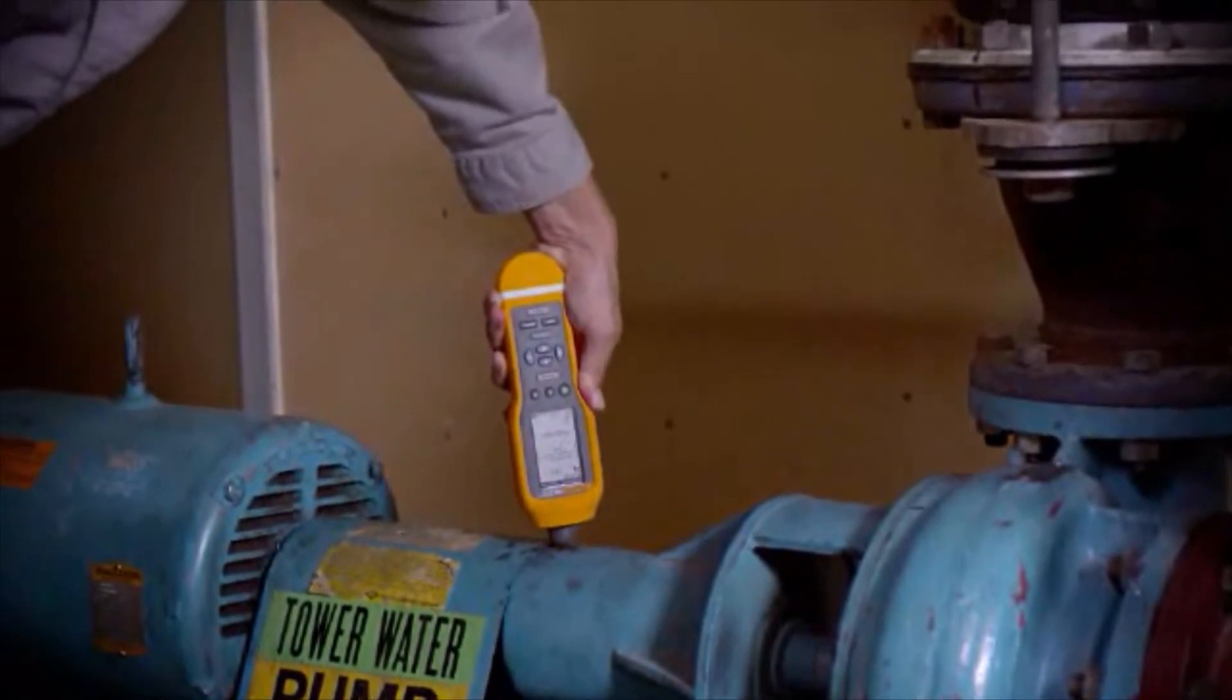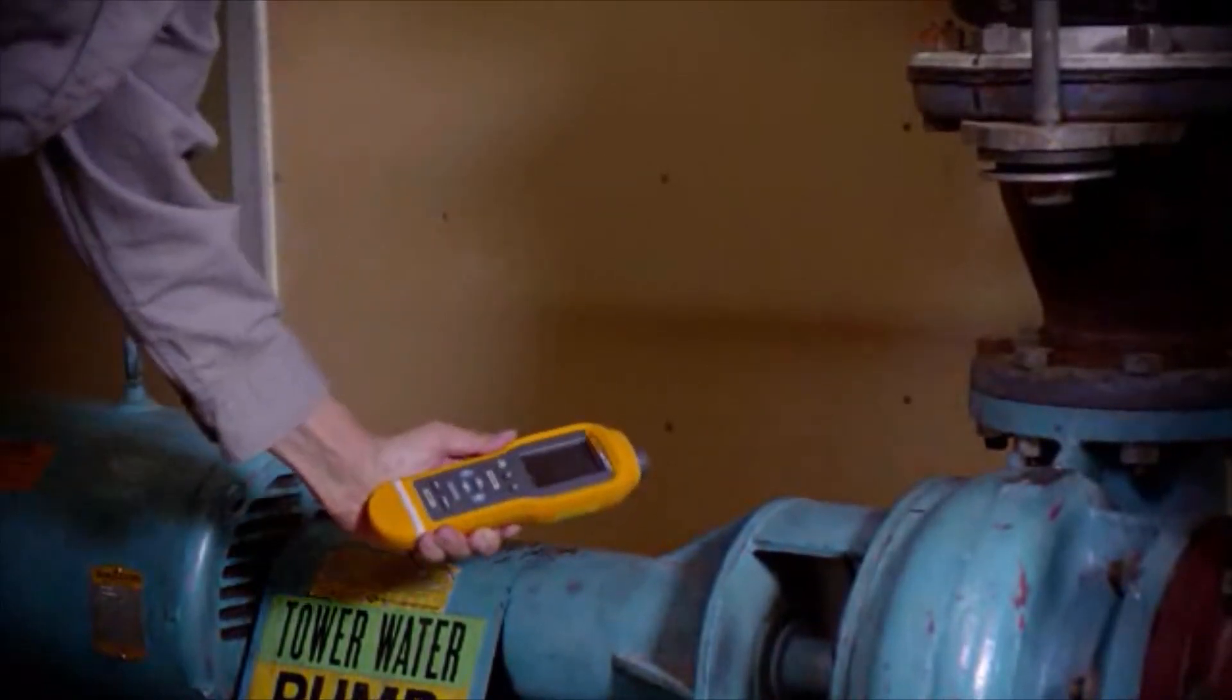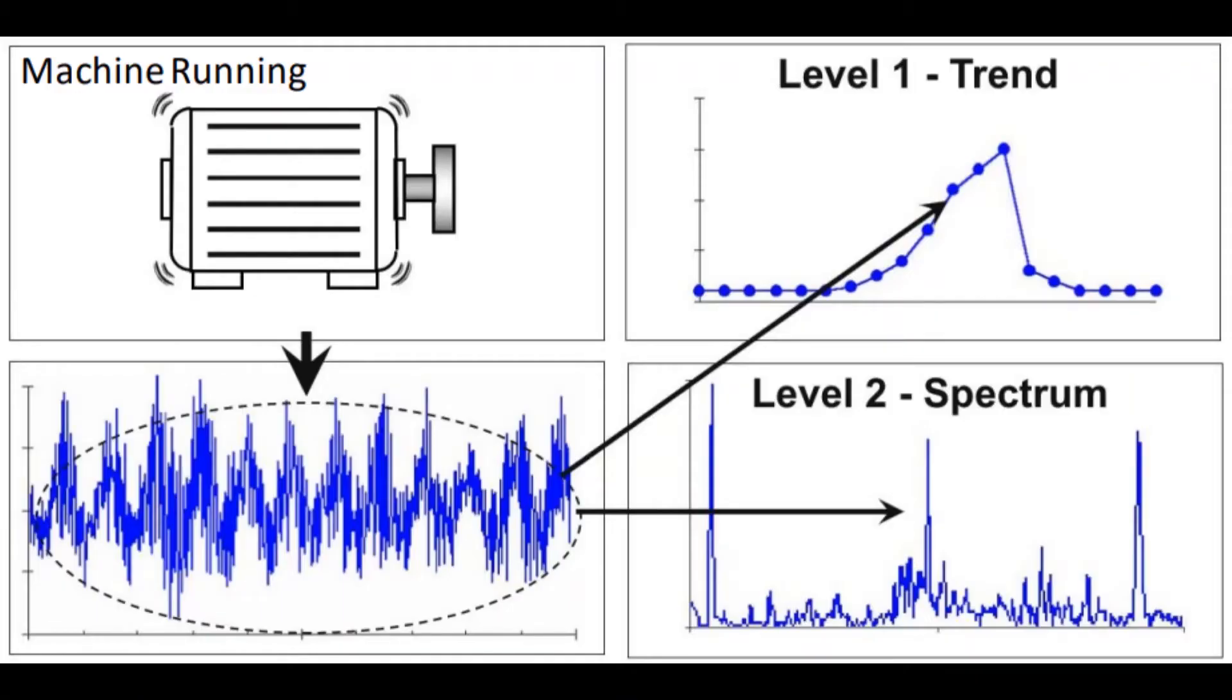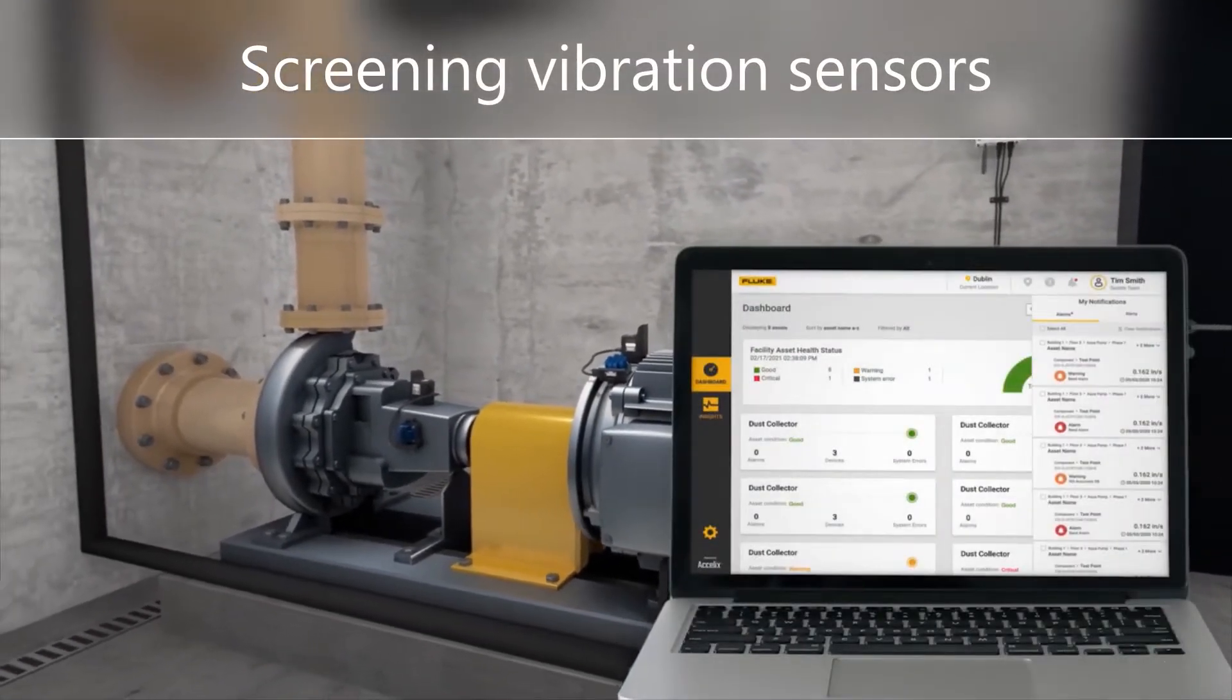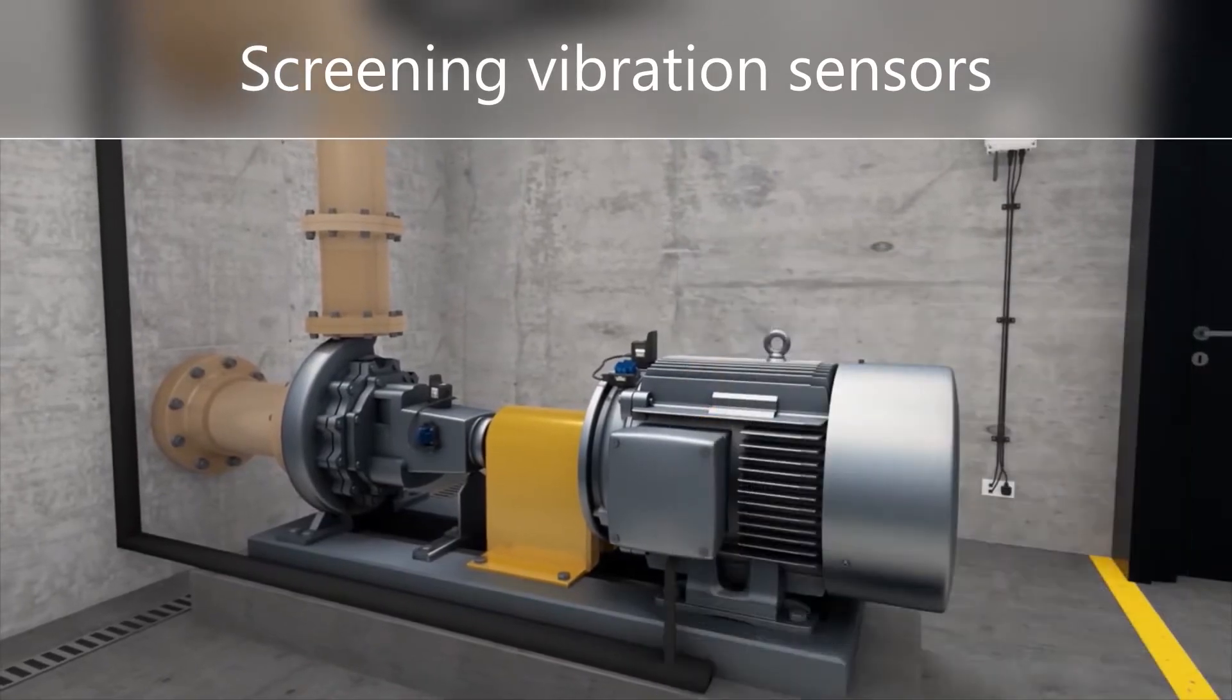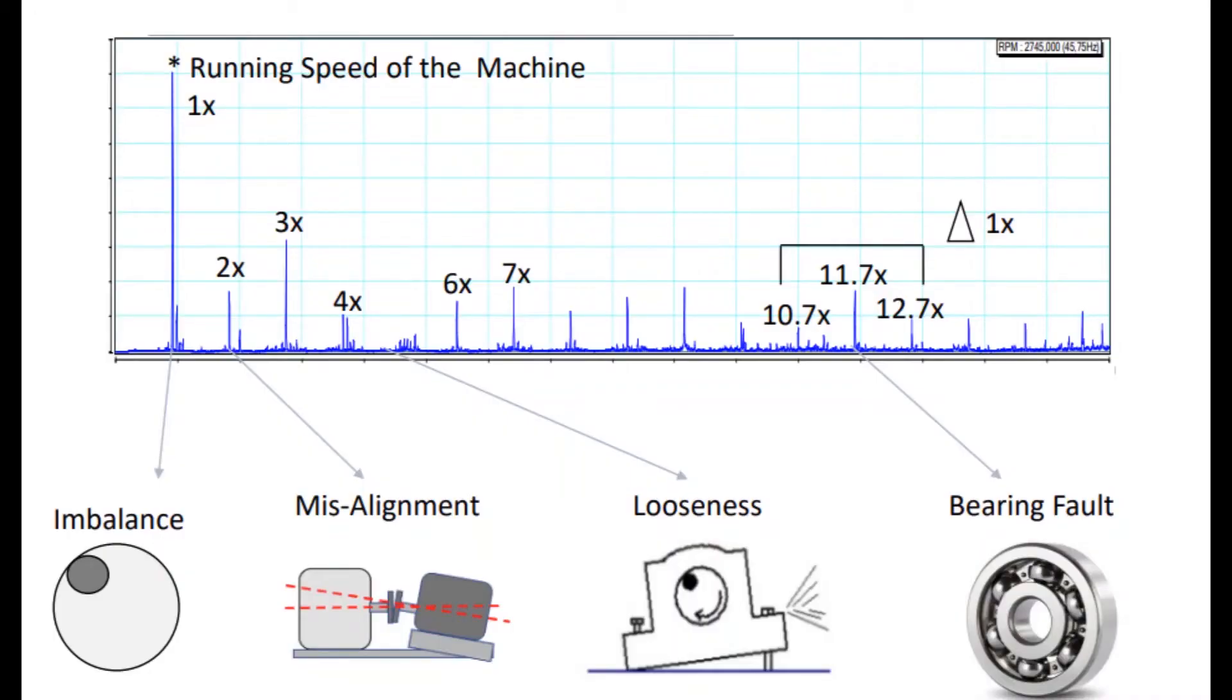Vibration screening is an effective way to screen a machine to determine if it is good enough to run or needs further testing. Trends of simple numbers and broadband alarms that look at all vibration sources quickly indicate potential problems. But just like blood pressure and pulse are easy to track, an increase could mean something is bad or nothing at all.